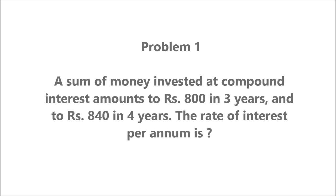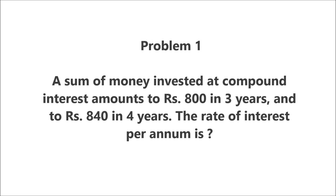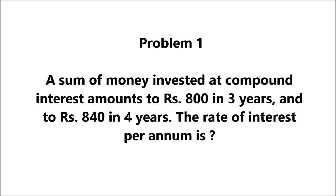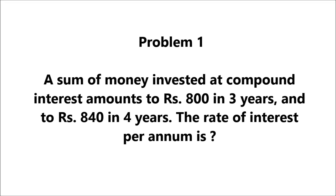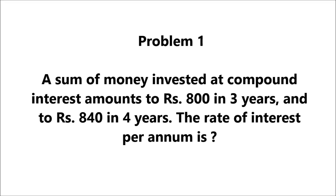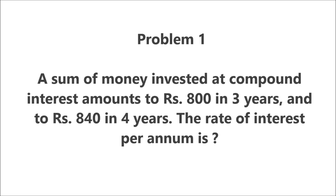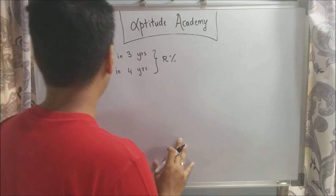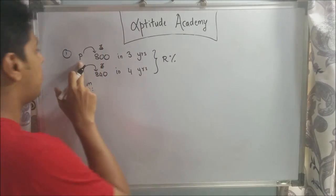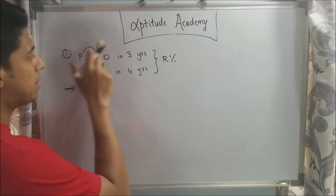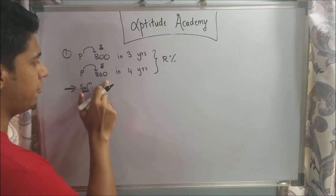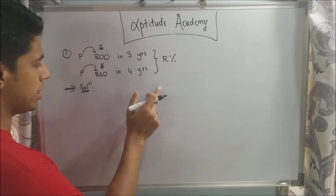Problem 1: A sum of money invested at compound interest amounts to Rs. 800 in 3 years and to Rs. 840 in 4 years. The rate of interest per annum is...